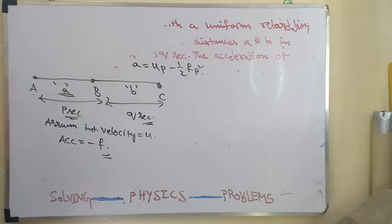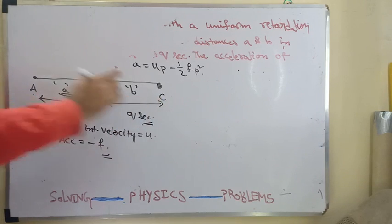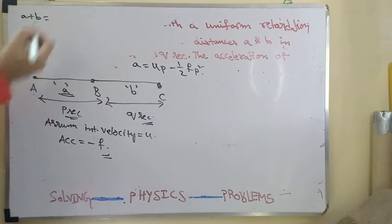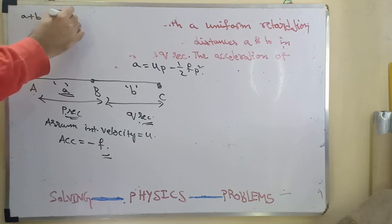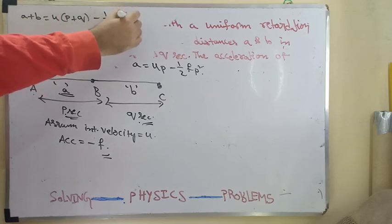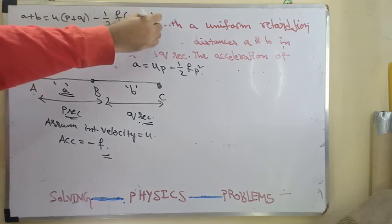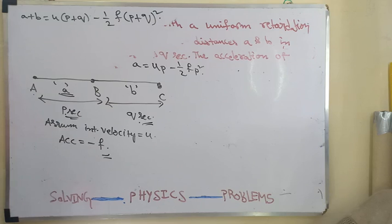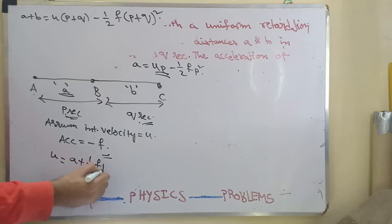A is equal to U P minus half F P square. And next, to cover the total distance AC, that will be the distance A plus B. It took P plus Q seconds. So you can write U into P plus Q minus half F into P plus Q whole square. From this equation, let us find what is the value of U. U can be found out as A plus half F P square divided by P.